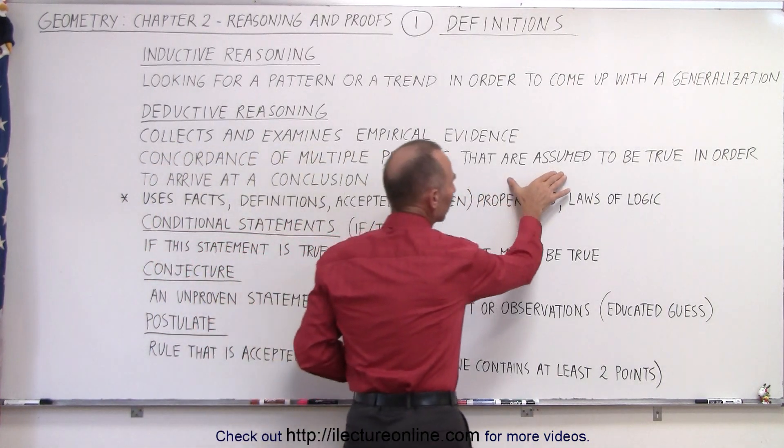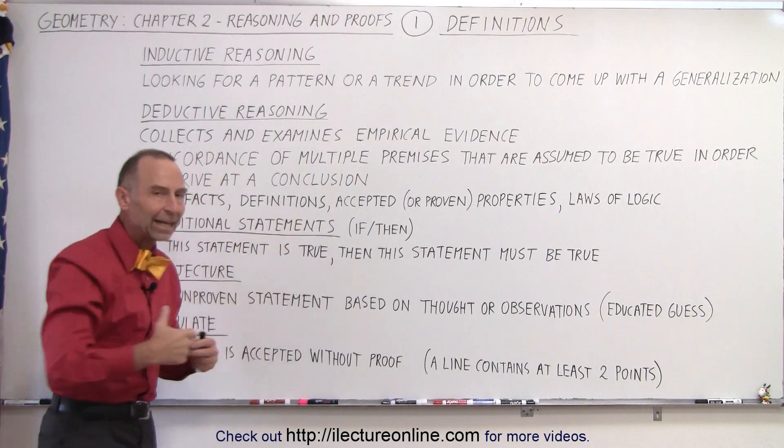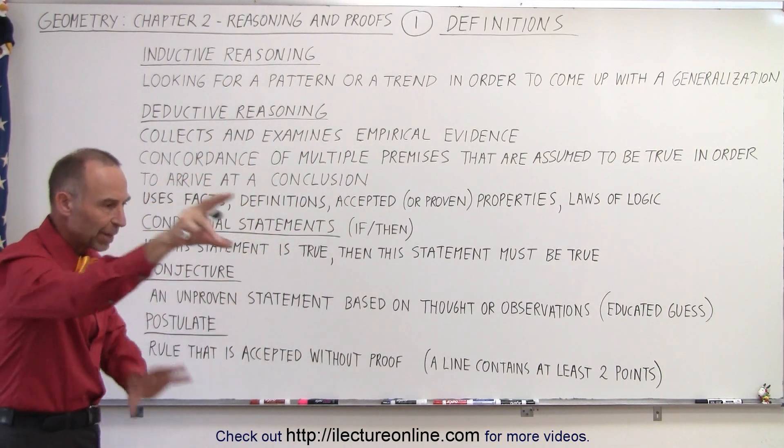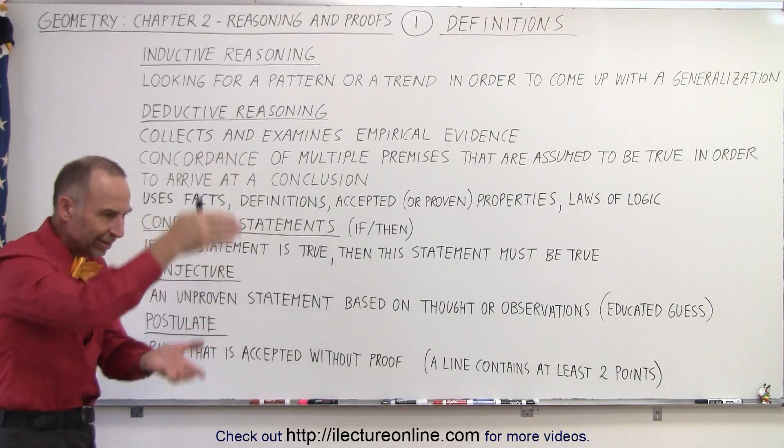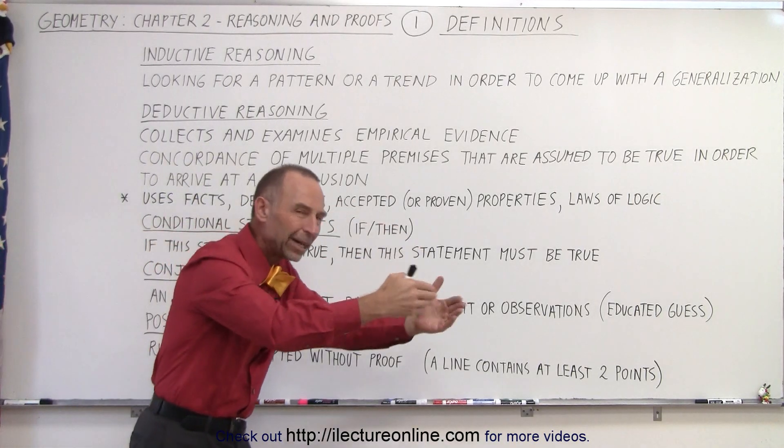And then, of course, we look for things that are assumed to be true in order to derive or to arrive at a final conclusion. So we look at various pieces of information and data. We look for the similarities between them. And then based upon that, we should be able to draw a conclusion.